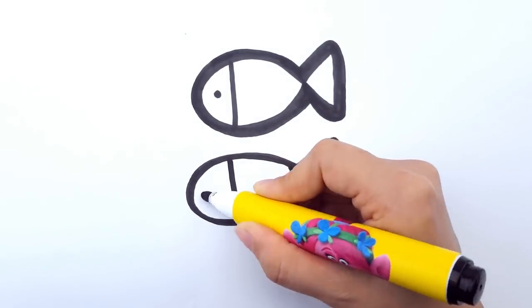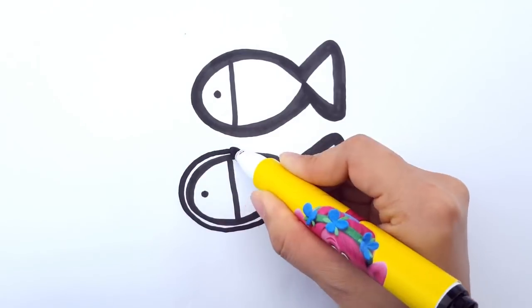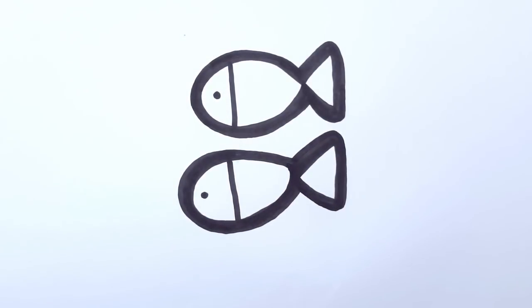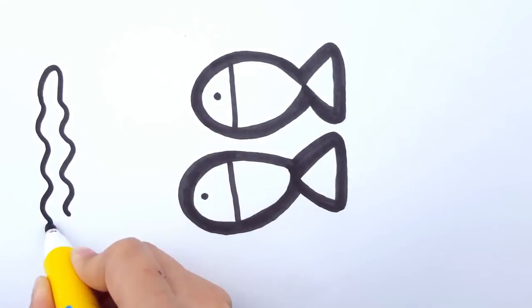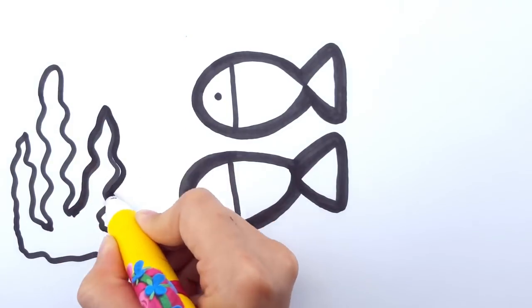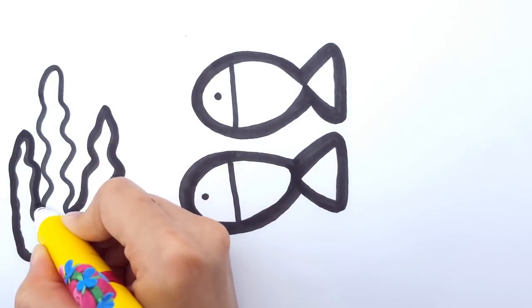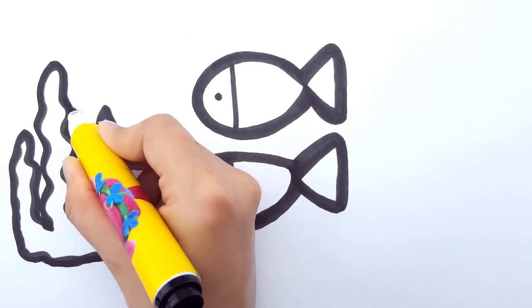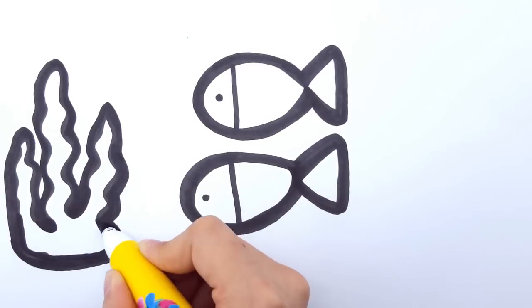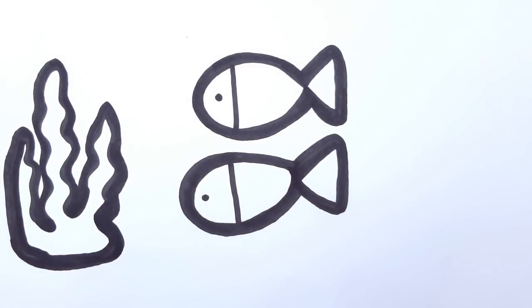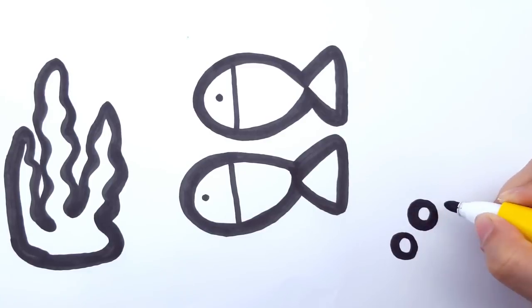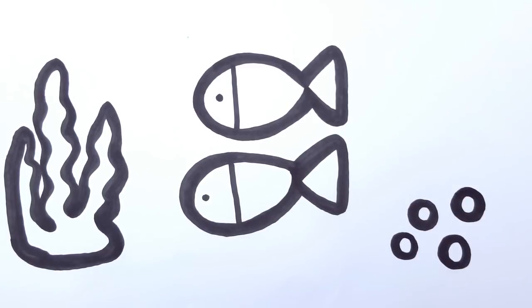Now let's draw another fish, shall we, so they have friends and they can swim together. Oh, you need to eat as well, so I'm drawing some seaweed for them so they can stay healthy and keep swimming around and blowing bubbles. So let's draw some bubbles as well. How many should we draw? Four. Okay, one, two, three, and four.